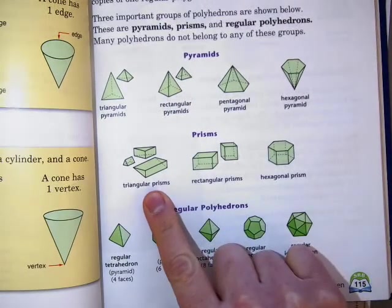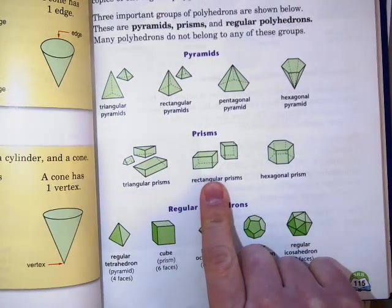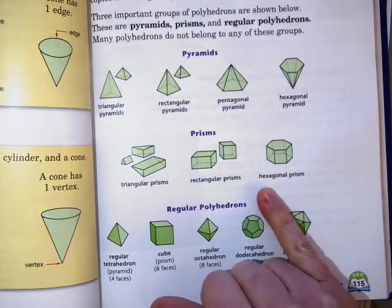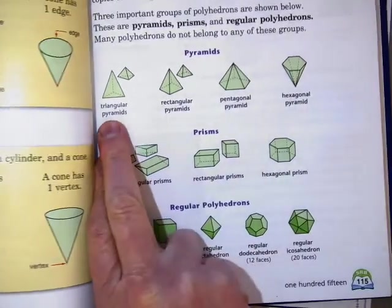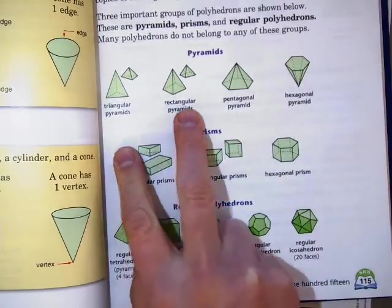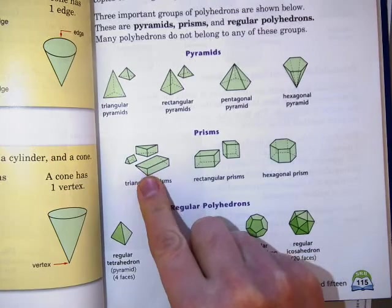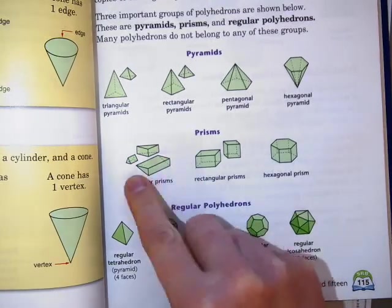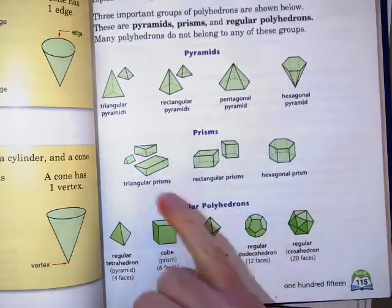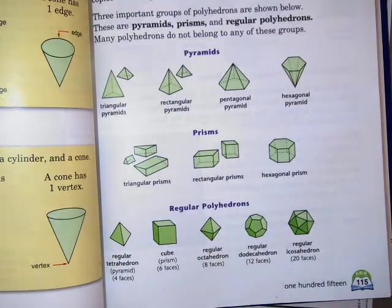Here's some Prisms: Triangular Prism, Rectangular Prism, and Hexagonal Prism. Basically, what determines if it's triangular or rectangular is how many sides it's got that are connected by the prism.